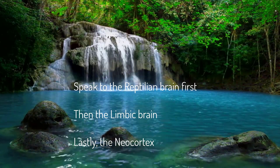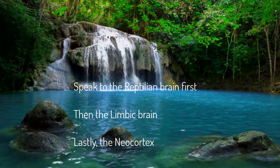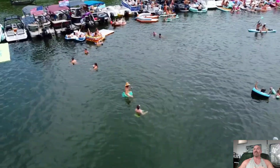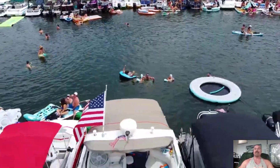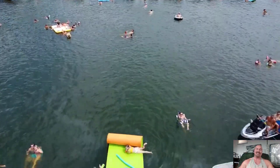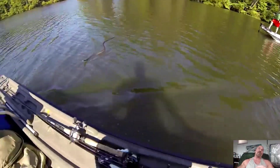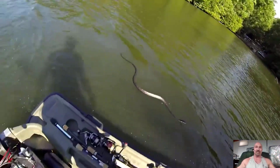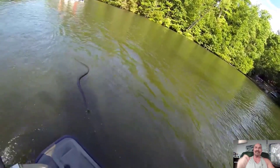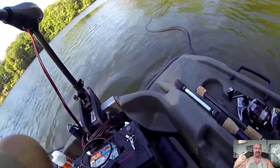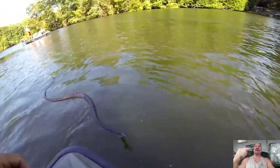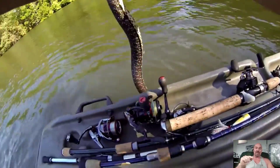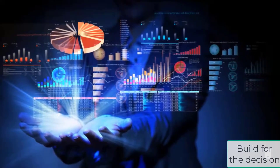This brain can make survival decisions before you or the other brains can even begin to process the data. I know this firsthand — we were out at the lake, I was floating on a raft talking with friends and family. I felt something brush my leg, and before I could even look, I had reached down, grabbed, and thrown a four-foot water snake at least 30 feet across the water. I literally grabbed and threw a snake before my neocortex could even register there was a snake on my lap. That's the reptilian brain.